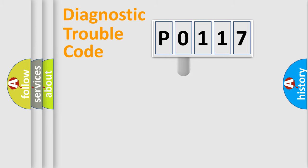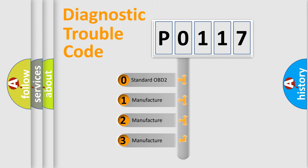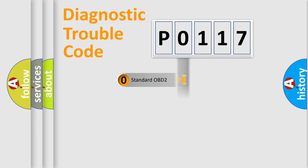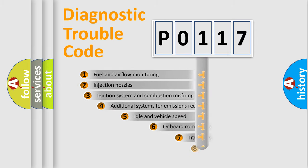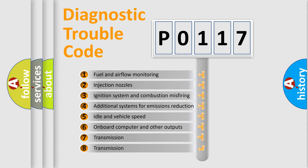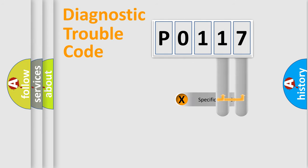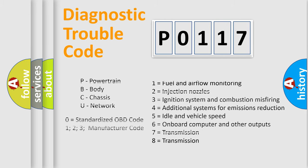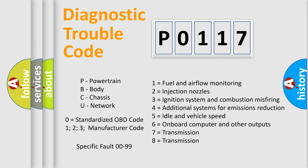This distribution is defined in the first character of the code. If the second character is expressed as zero, it is a standardized error. In the case of numbers 1, 2, or 3, it is a more specific car-specific error. The third character specifies a subset of errors, and this distribution is valid only for the standardized DTC code. Only the last two characters define the specific fault of the group. This division is valid only if the second character code is expressed by the number zero.